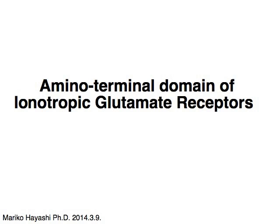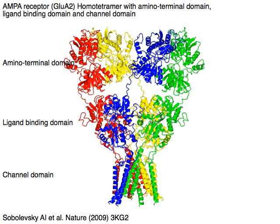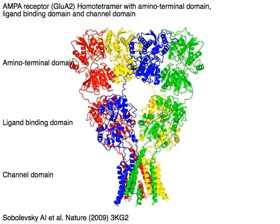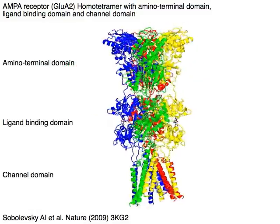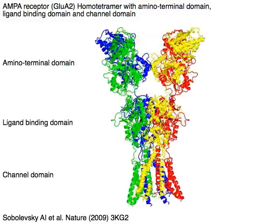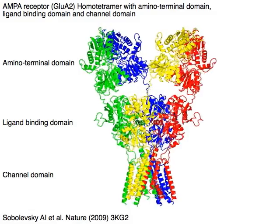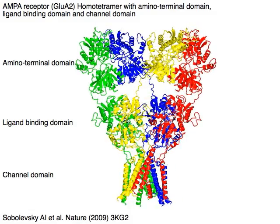Amino Terminal Domain of Ionotropic Glutamate Receptors: AMPA Receptor GLU-A2 homo-tetramer consists of an Amino Terminal Domain, Ligand Binding Domain, and Channel Domain.